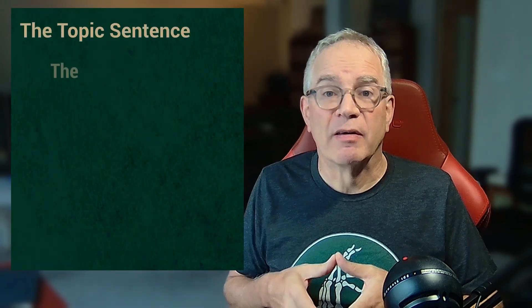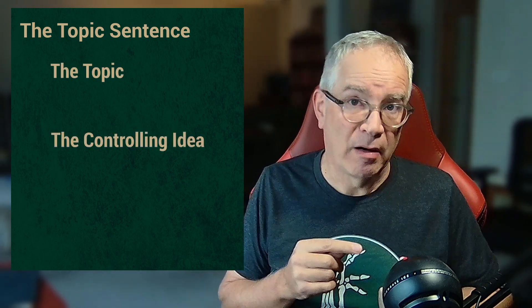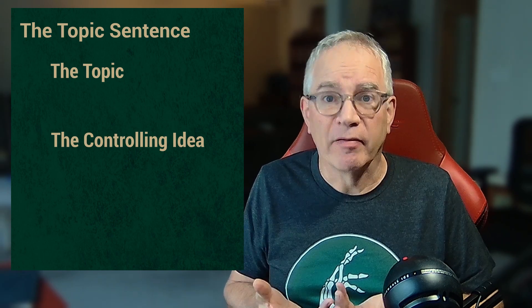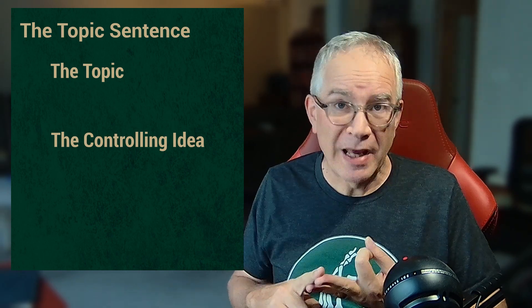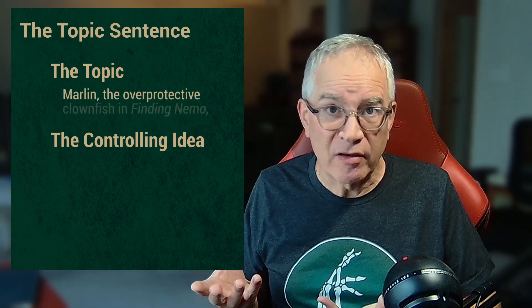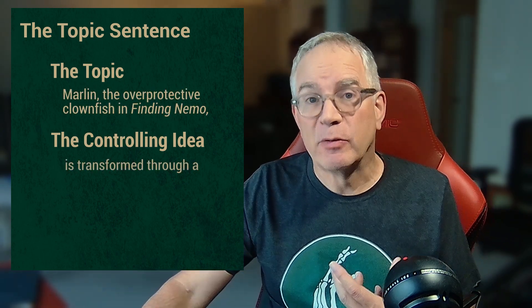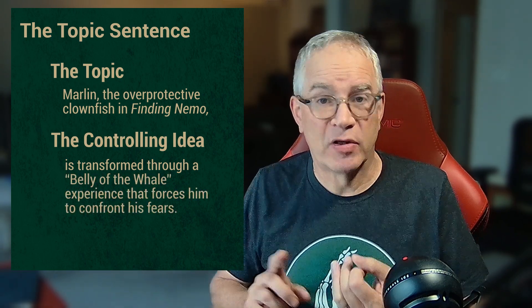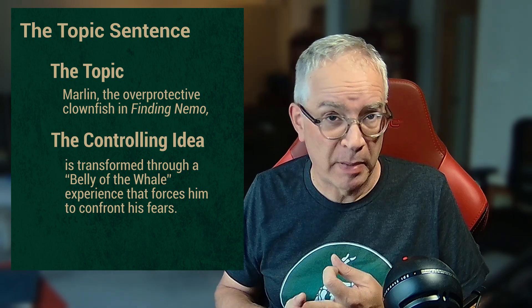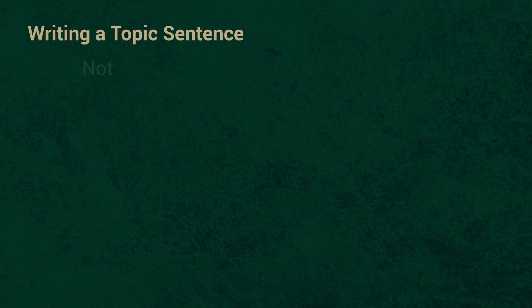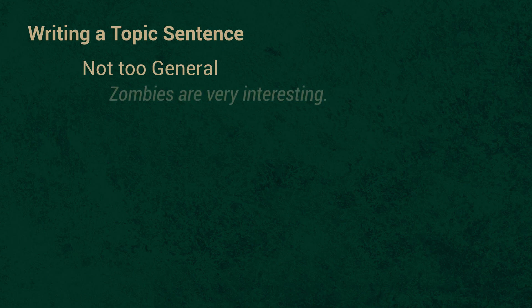The topic sentence usually has two parts: the topic part and the controlling idea part. The topic is simply the subject of the paragraph — zombies, craft dinner, Romeo, Marlin's belly and the whale experience. And then there's the controlling idea. It needs to indicate what you will say or show or explain about zombies, craft dinner, or Marlin's belly and the whale experience. So when you add the controlling idea to the topic, you need to make sure that your topic sentence isn't too general. For instance, 'zombies are very interesting' — this is too general. Your reader won't have a clear idea about where this paragraph is going, and if you actually tried to show what this topic sentence said you were going to show, the paragraph would be ridiculously long. Because yes, zombies are that interesting.